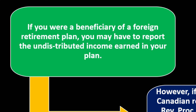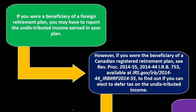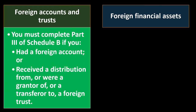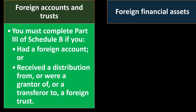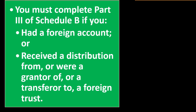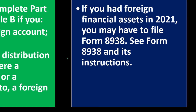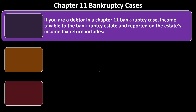Foreign retirement plans: if you were a beneficiary of a foreign retirement plan, you may have to report undistributed income earned in the plan. If you were a beneficiary of a Canadian registered retirement plan, see Rev. Proc. 2014-55, 2014-44 IRB 753 at irs.gov to determine if you can elect to defer tax on undistributed income. Report distributions from foreign pension plans on lines 5a and 5b. If you had a foreign account or received a distribution from a foreign trust, complete Part 3 of Schedule B. If you had foreign financial assets in 2021, you may need to file Form 8938.